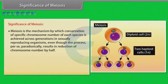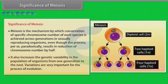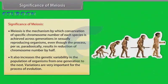Significance of meiosis. Meiosis is the mechanism by which conservation of specific chromosome number of each species is achieved across generations in sexually reproducing organisms, even though the process per se paradoxically results in reduction of chromosome number by half. It also increases the genetic variability in the population of organisms from one generation to the next. Variations are very important for the process of evolution.